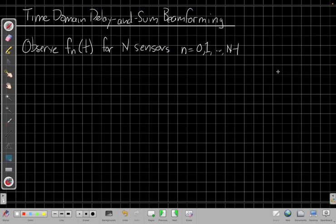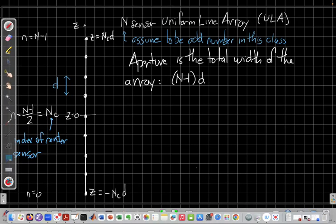So again, this is the time domain delay and sum beamforming, and we're going to assume we've observed some time domain signal P_n(t) for N sensors, capital N sensors, that go from n equals 0, 1 up to N minus 1 in the uniform linear array like we talked about in the previous video. So just to remind you, the array looks like this, where the sensors are spaced by d along the z axis, and we index them from n equals 0 at the bottom to n equals 1, so that n increases with increasing z along the axis.